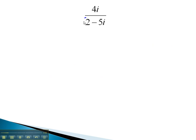In this problem, we've got a binomial with two terms. So we'll multiply by the conjugate 2 plus 5i in both the numerator and denominator.